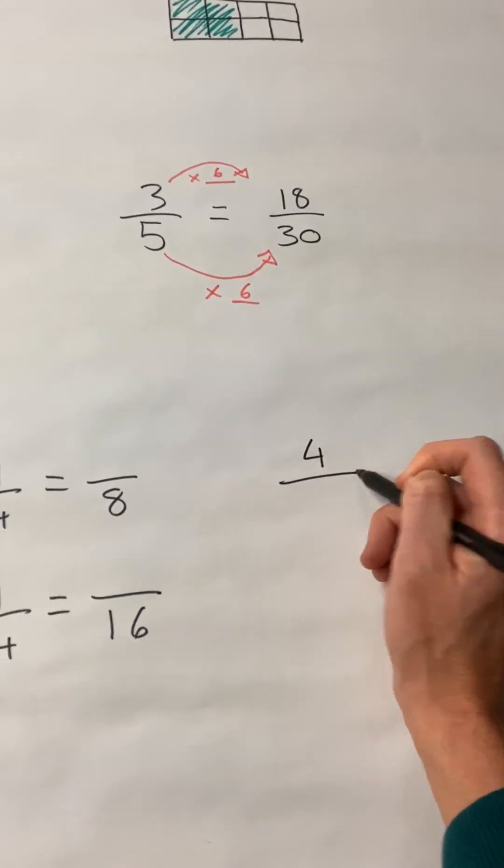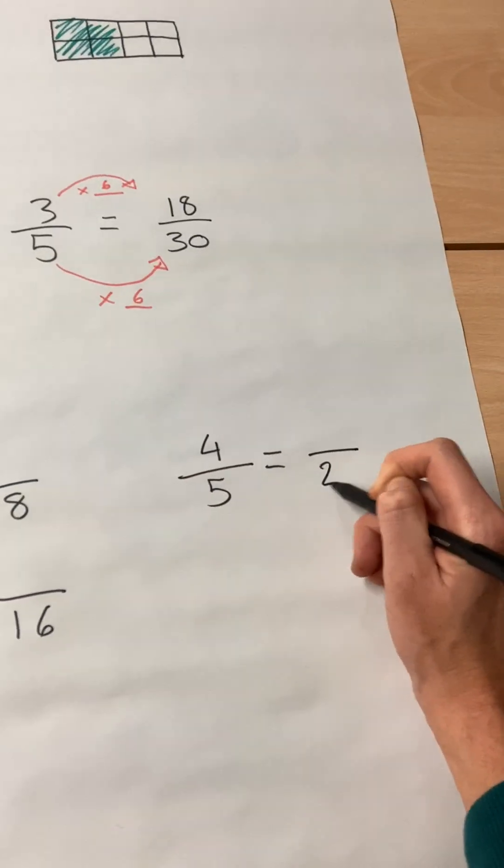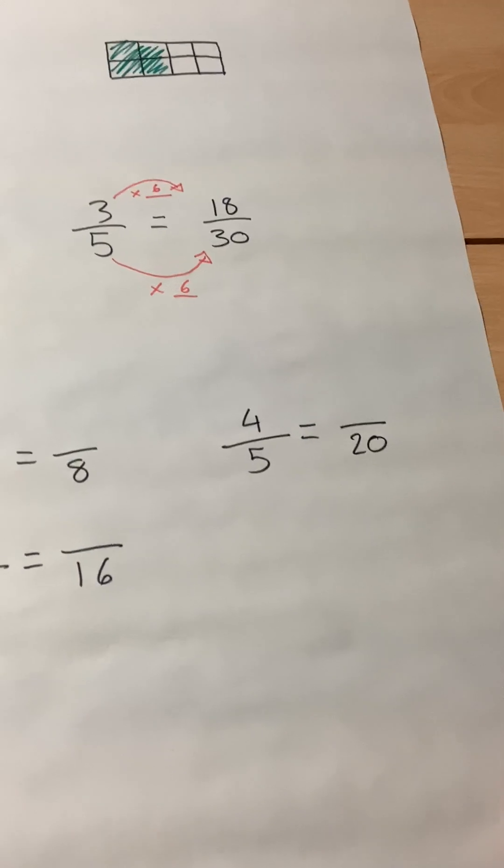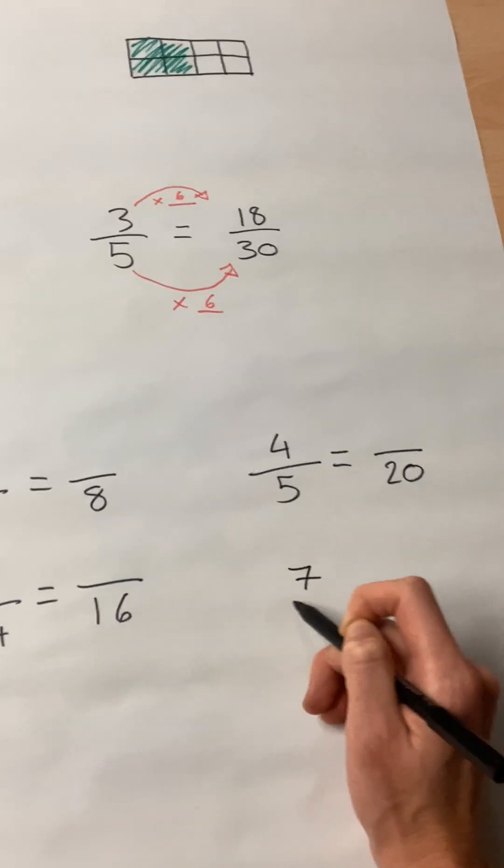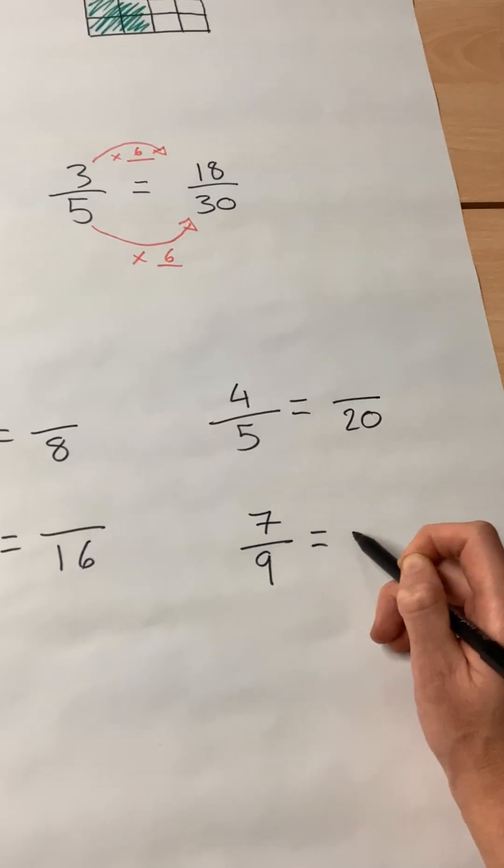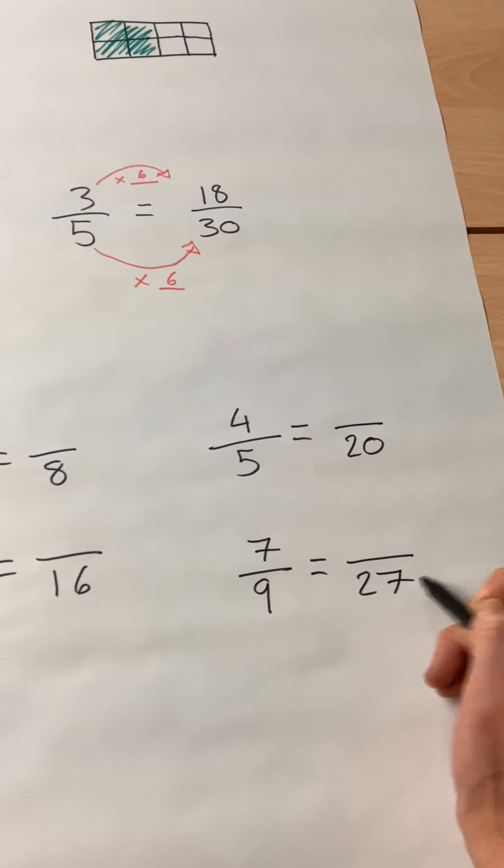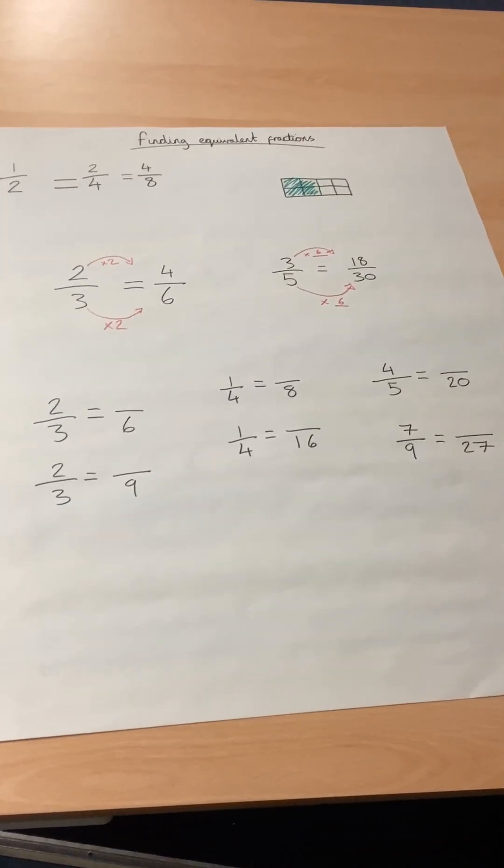Four fifths is equivalent to how many twentieths? And seven ninths is equivalent to how many twentieths? Six challenges there of increasing difficulty.